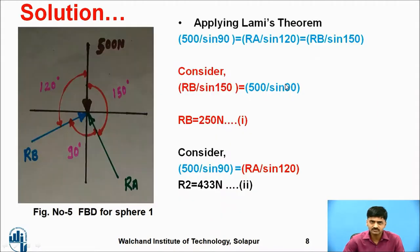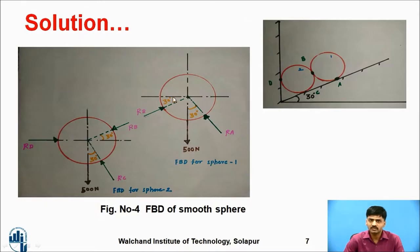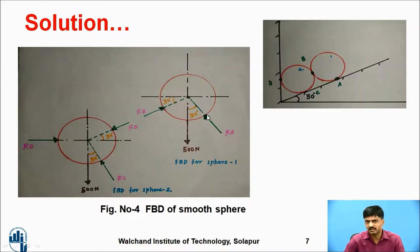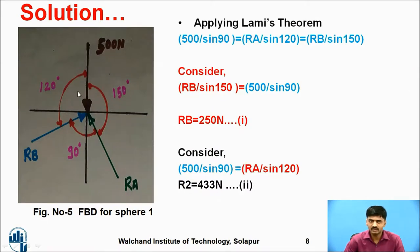Let us apply the equations. Consider sphere one — weight W acts downward at 500 newtons. Changing the geometry but not the direction, R_B acts towards the joint. The angles between the three forces are: 90 degrees between R_A and R_B, 120 degrees between R_A and W (90 plus 30), and 150 degrees between R_B and W (90 plus 60). We apply Lami's theorem using these angles.